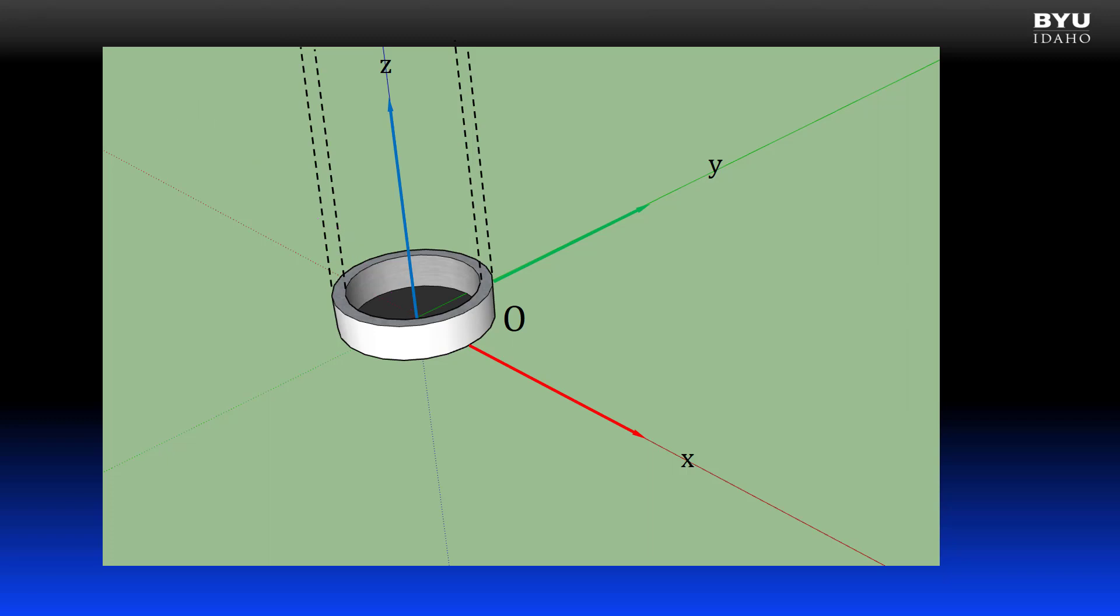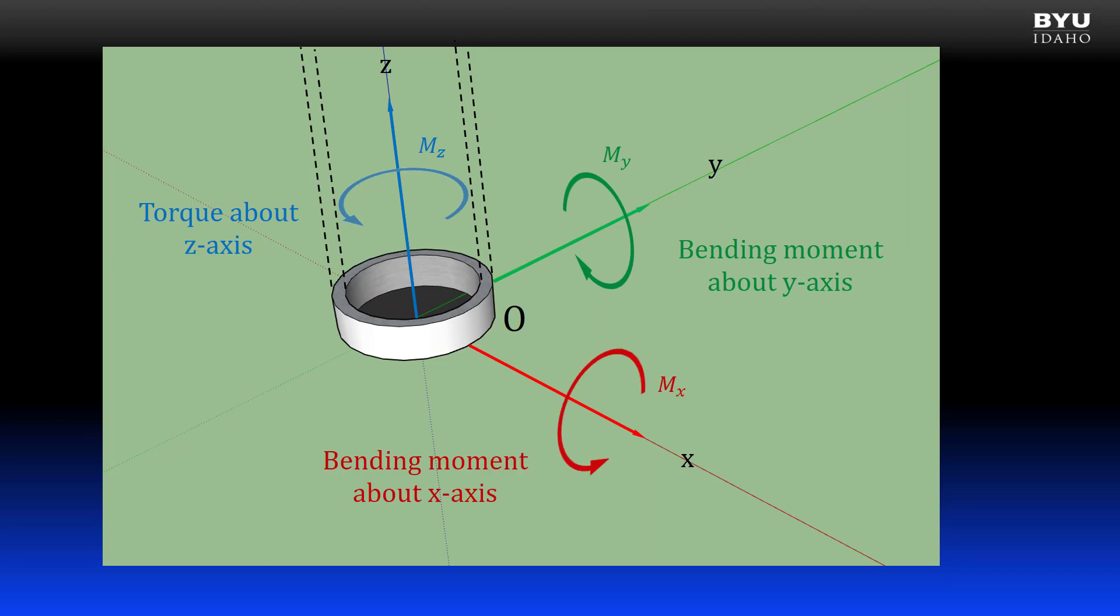For example, the component about the Z axis would be the torque on the bar, causing shearing stresses. The components about the Y and X axes would be bending moments, causing tension and compression stresses. We would need to design this bar to be able to withstand those stresses.